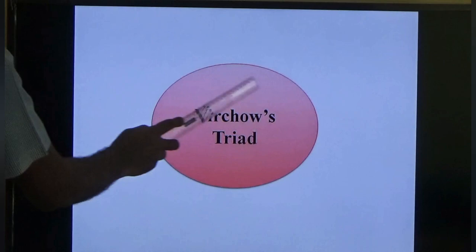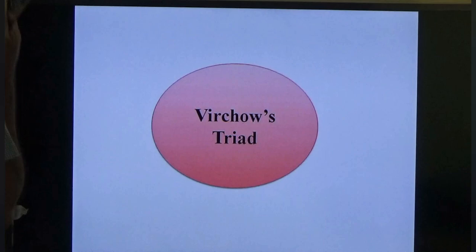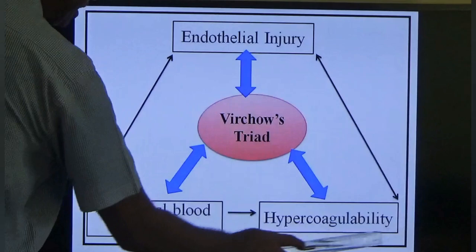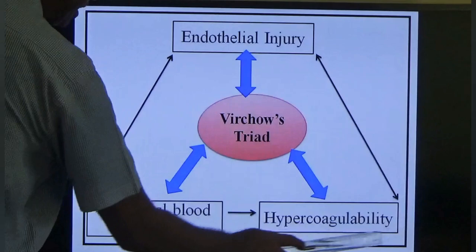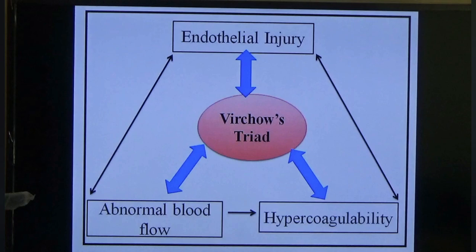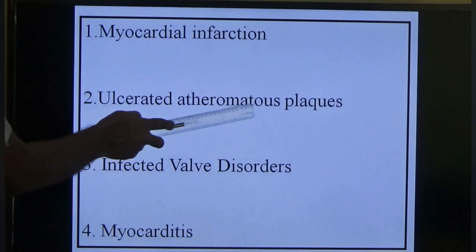Causes of thrombosis are studied under Virchow's triad — three components: endothelial injury, abnormal blood flow, and hypercoagulability. These correspond to the three hemostasis components: endothelium, coagulation system, and platelets/other factors. Endothelial injury causes include myocardial infarction, ulcerated atheromatous plaques, infected valve disorders, and myocarditis — all producing injury to the endocardium, triggering pro-coagulant release.